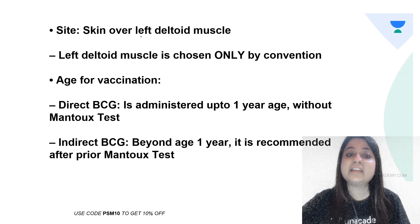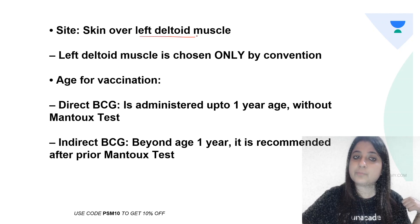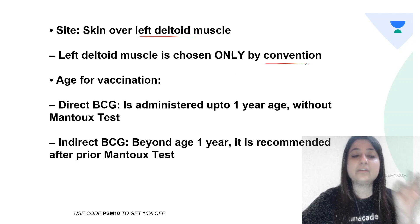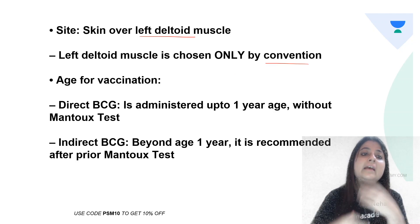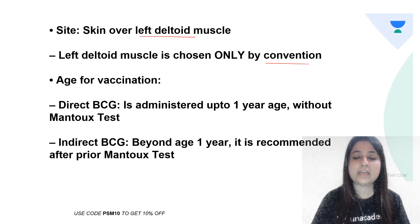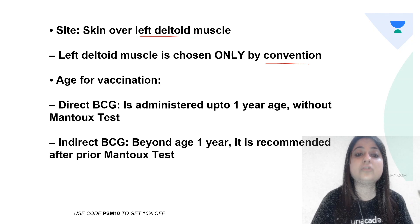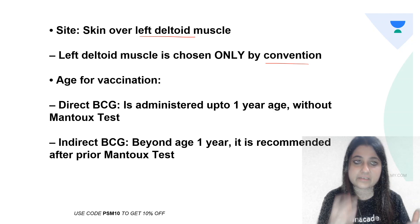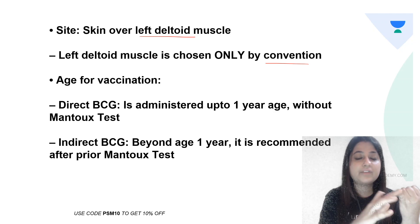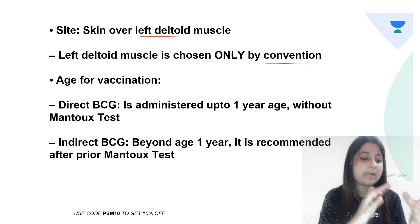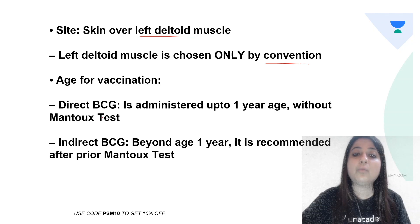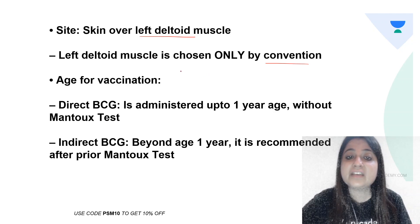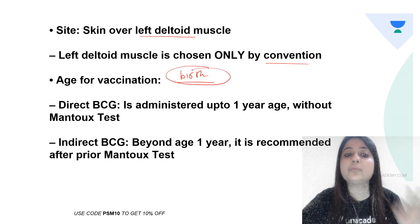In India, BCG is given in the left deltoid muscle. This is chosen by convention — it is not that we cannot give it in the right deltoid, but we give the left deltoid so that field workers and health workers know the child has been vaccinated. BCG is given at birth.